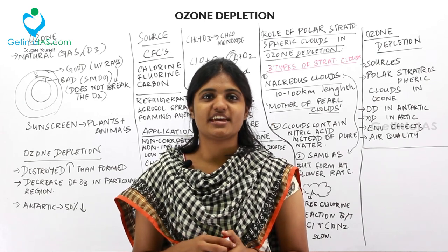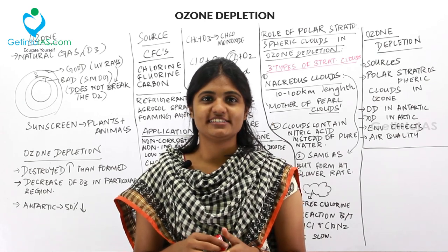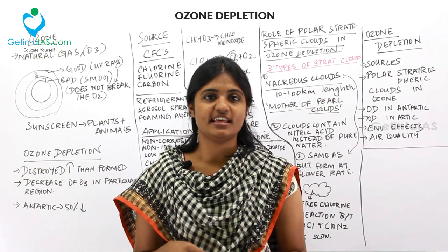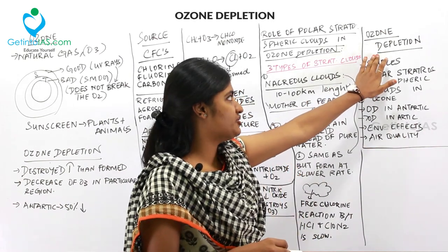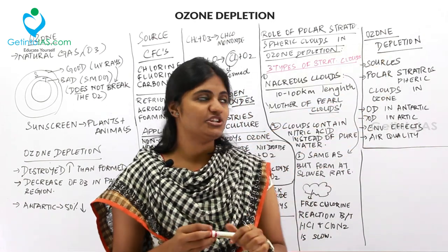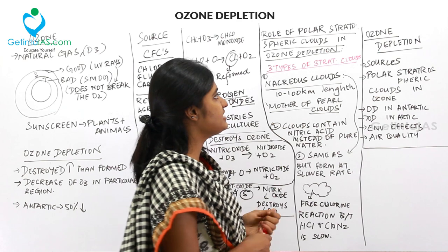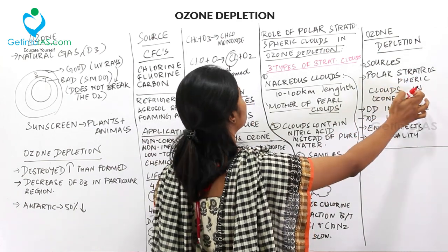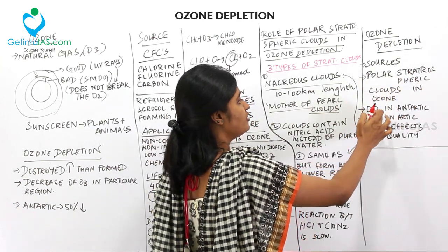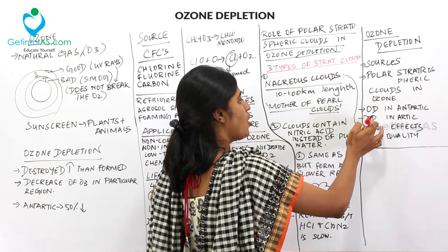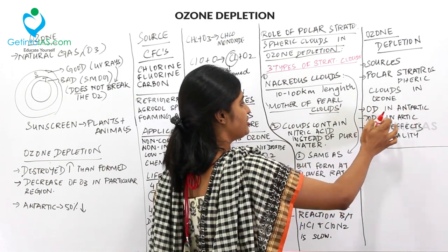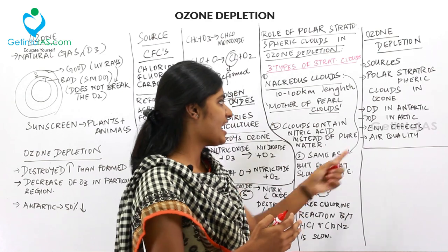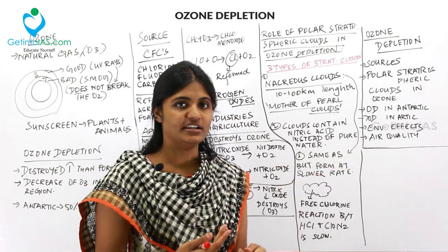Hello all, welcome to Get Into IAS. In this video we are going to deal with the lesson ozone depletion. Under ozone depletion we are going to see the sources, polar stratospheric clouds in ozone, ozone depletion in Antarctic, ozone depletion in Arctic, environmental effects, and lastly air quality.